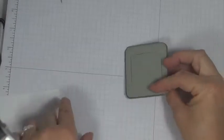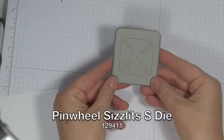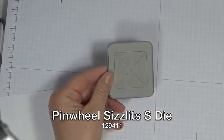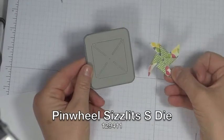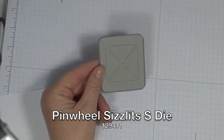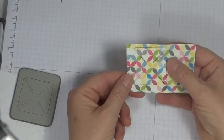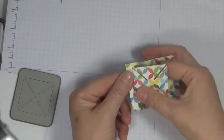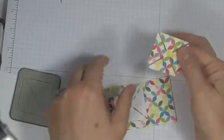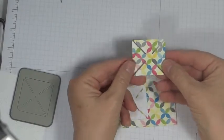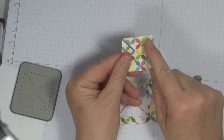This is the Sizzlet that we're going to be using and this is the finished pinwheel. So when you run it through the Big Shot you end up with a piece looking like this. It gives pretty good a cut.